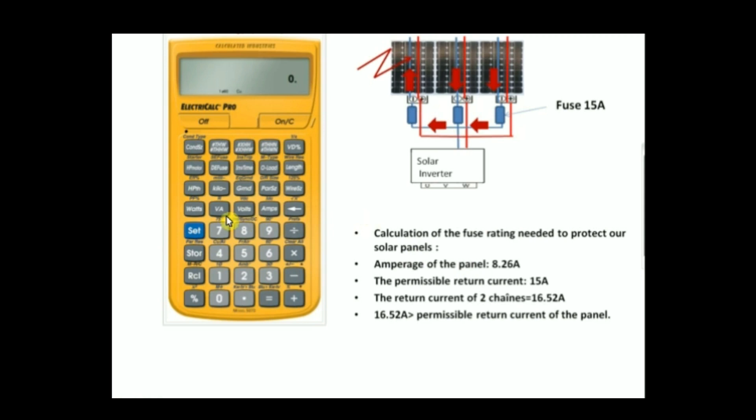Now we're going to enter the current which is provided by each chain, which is 8.26 amps. So we're going to enter 8.26 amps, and now we're going to click on the Fuse button.